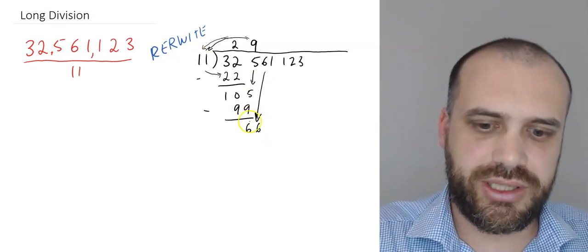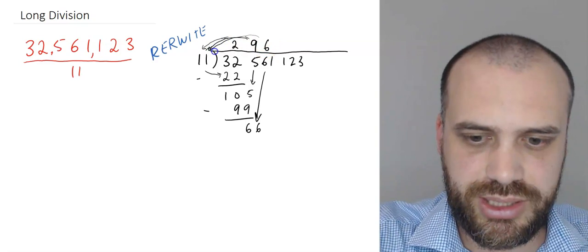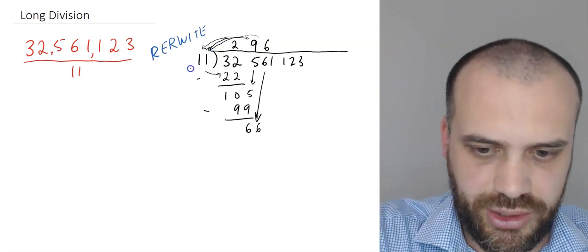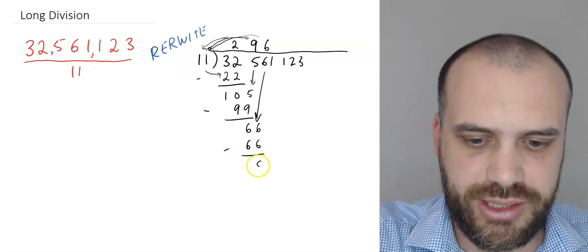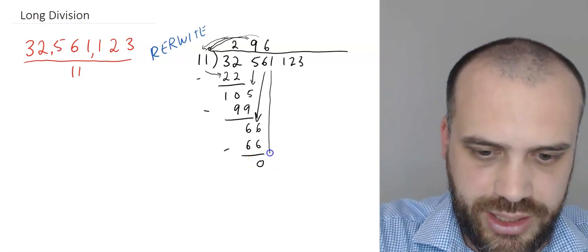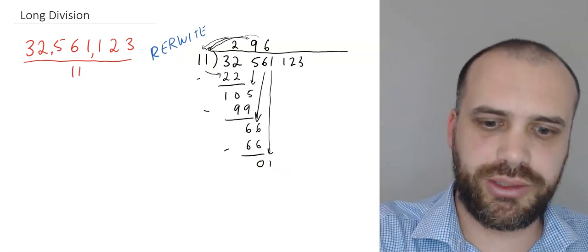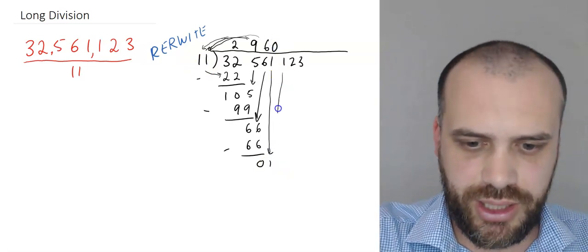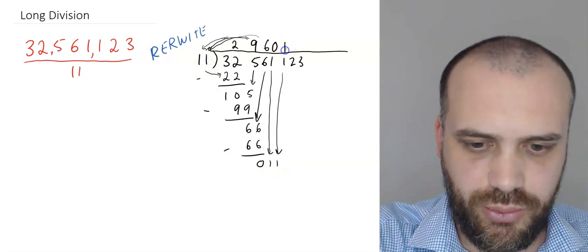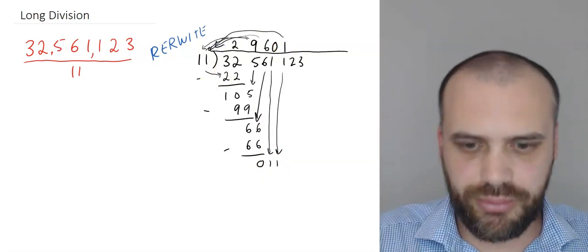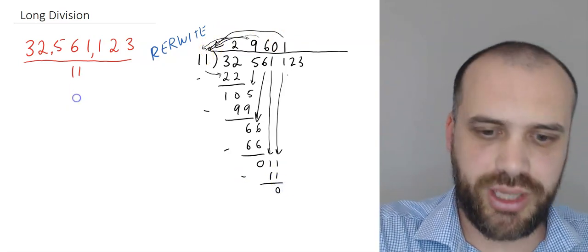We know that 11 goes into 66 exactly 6 times. So 6 there. This times this is 66. So that goes down to here. Subtract one from the other. 66 minus 66 is 0. Bring the next thing down. Does 11 go into 1? No. I need to put a little 0 here and bring the next thing down. Does 11 go into 11? Yes, it does. Exactly once. 1 times 11. Rhythm. Round we go. 1 times 11 is 11. Subtract one from the other. 0. Bring the next thing down.